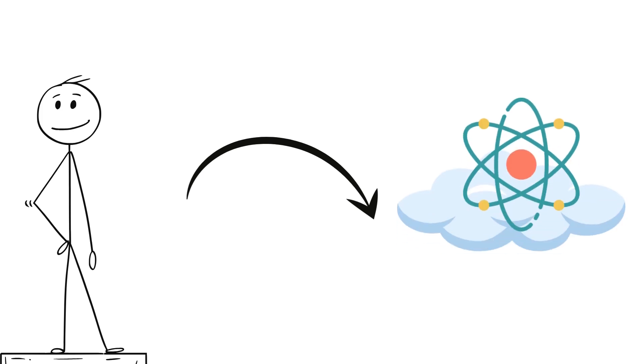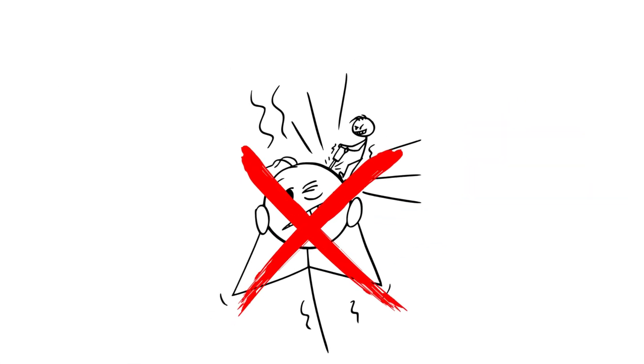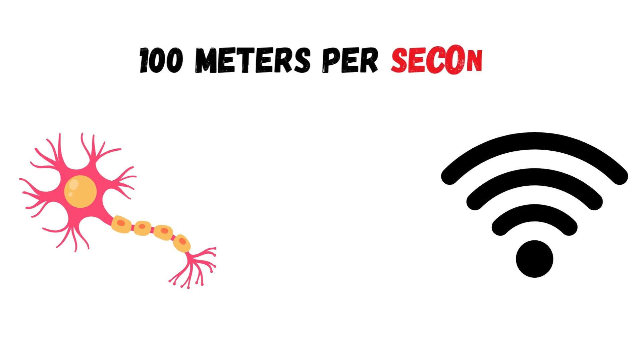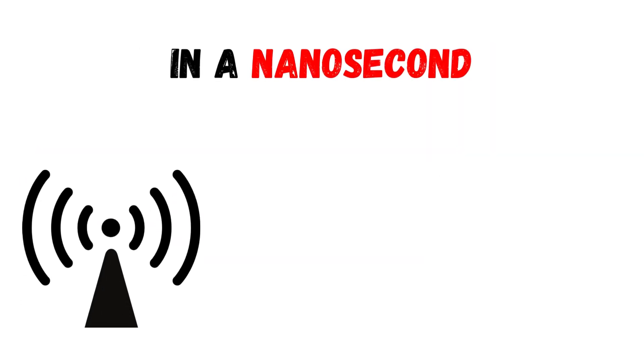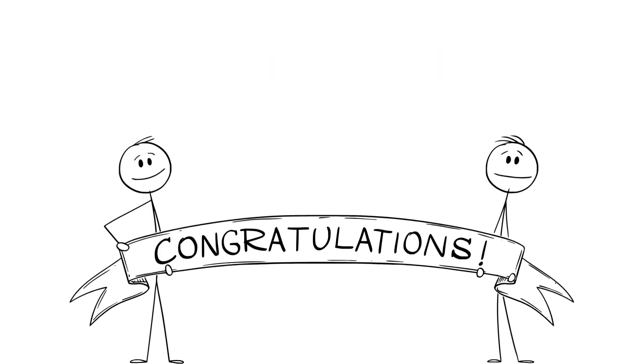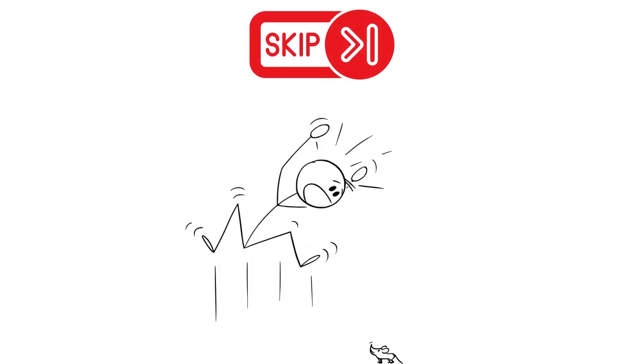In fact, you wouldn't even feel pain. Why? Because your nerves send pain signals at around 100 meters per second. In a nanosecond, the signal wouldn't even reach your brain. So congratulations, you've officially skipped the screaming part.